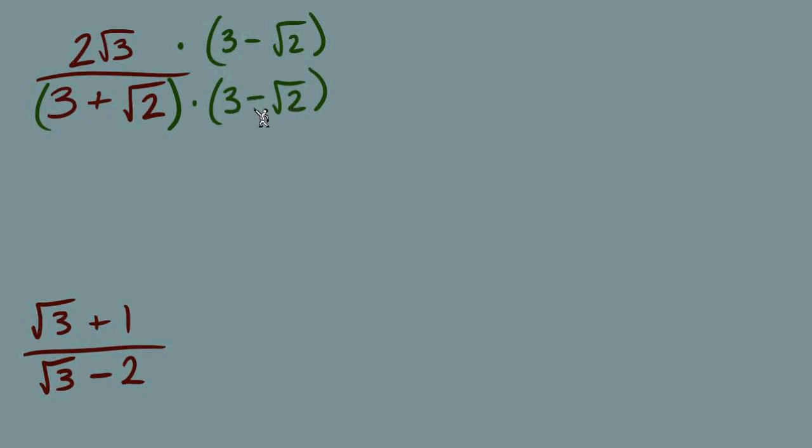And of course, multiply by the same two terms up in the numerator. Now the numerator, we will be doing a distribute, and the denominator will be doing FOIL. Now remember, 2 radical 3, we're looking at one term, no add and no subtract, so it's just this entire chunk multiplied to the 3 and then to this negative radical 2. Our first multiplication: 2 radical 3 times 3.